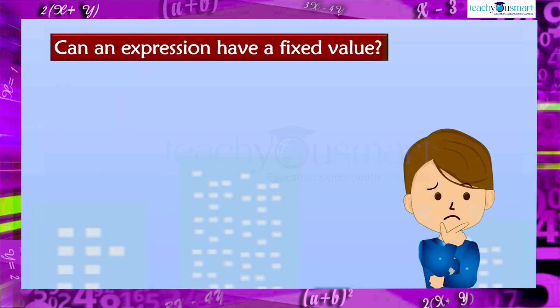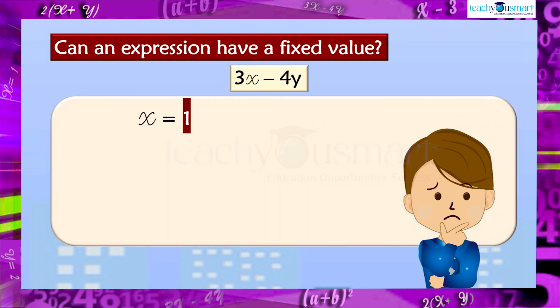Can an expression have a fixed value? Let's consider the expression three x minus four y, which contains two variables, x and y. If we take x as one and y as two, then three x minus four y becomes three times one minus four times two. That is, three x minus four y equals minus five.